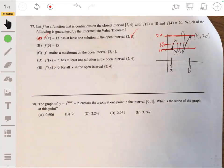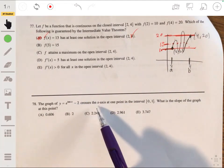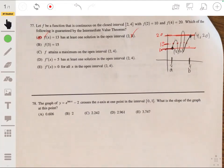78. The graph of y = e^(tan(x)) - 2 crosses the x-axis at one point in the interval [0, 1]. What is the slope of the graph at this point?